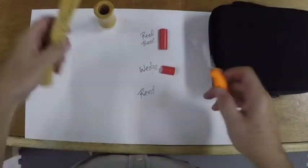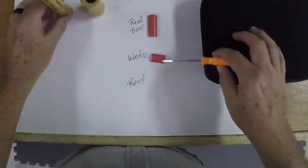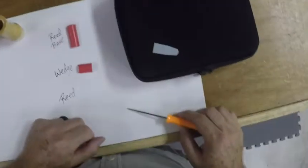You have the barrel, you have the mouthpiece, reed base, wedge, and of course the reed. Looks like that.